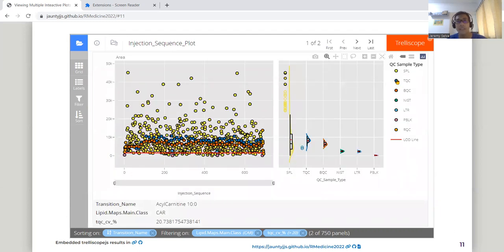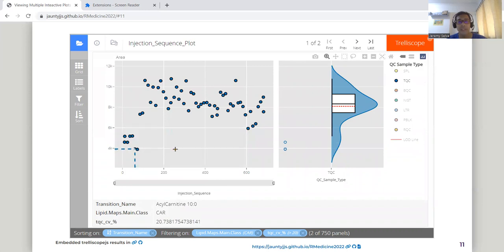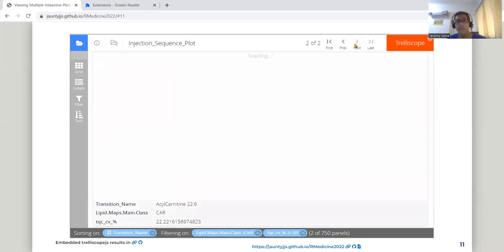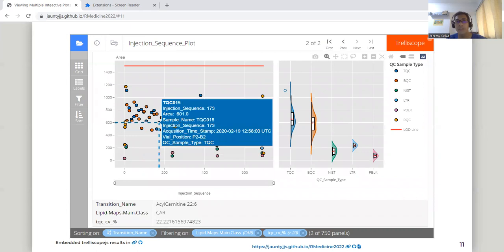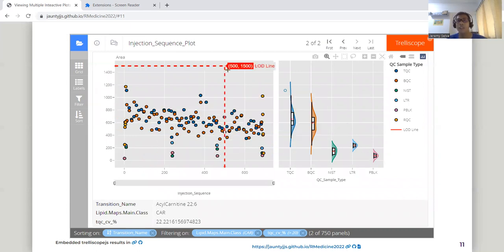Now we can see that the TQC was quite high because of something wrong with the machine in the beginning of the run. For the next transition, the variation is very high because of low signal. Because most of the points are below the limit of detection.